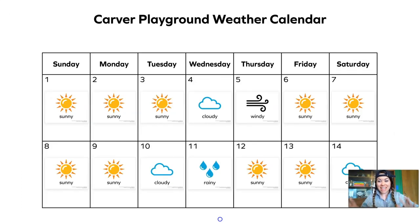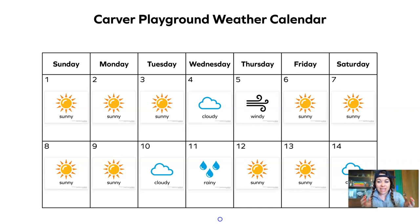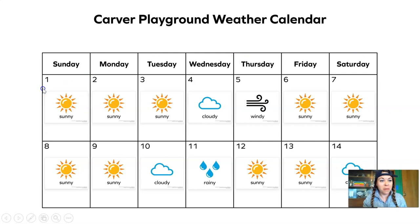Check this out. This is weather data that was sent to us by the principal of Carver Elementary School. Data is a really cool science word — it means information that we collect, study, and try to understand during an investigation. So this shows a calendar. Do you see the days of the week? Sunday, Monday, Tuesday, Wednesday, Thursday, Friday, Saturday. And these numbers represent the dates: the first of the month, the second, the third, and so on. So we have two full weeks of weather data here for Carver Playground.